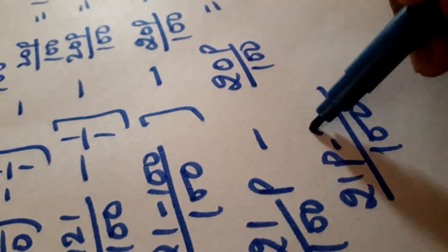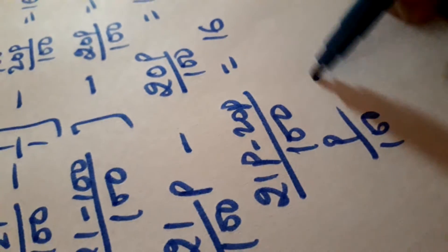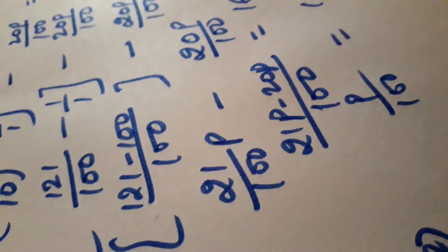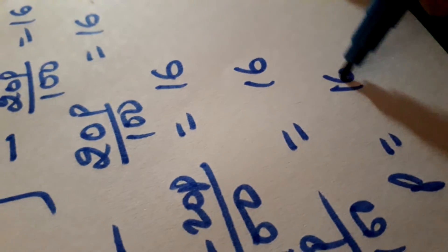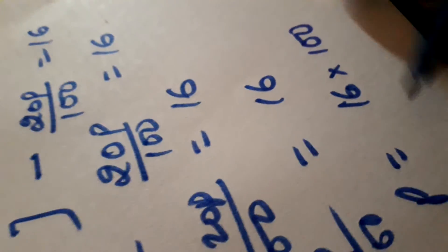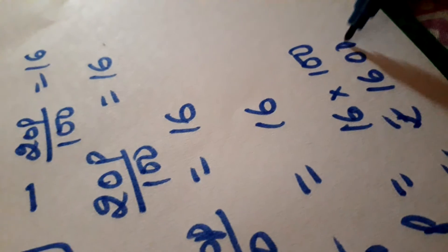Take LCM here 100, 21P minus 20P is equal to 16. We get P upon 100 is equal to 16. Therefore, P is equal to 16 into 100 is equal to 1600. This is the principle.